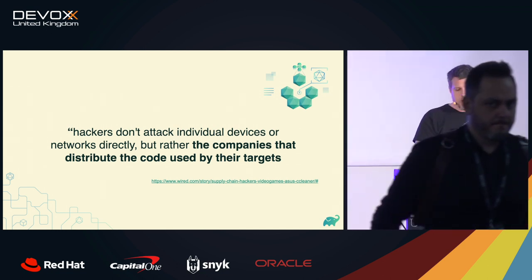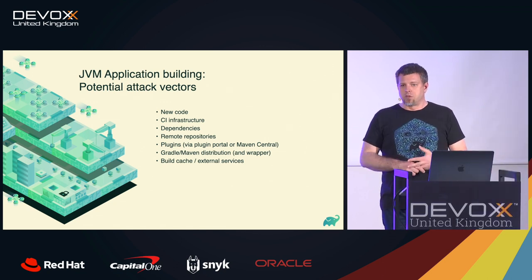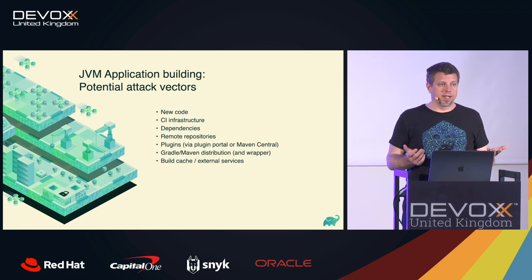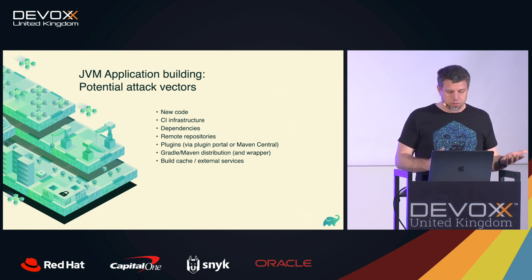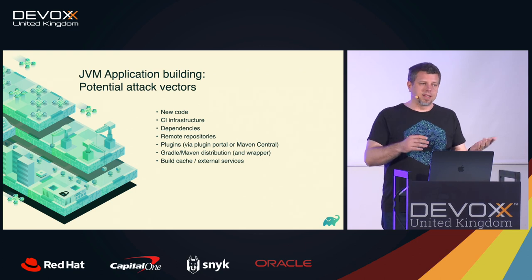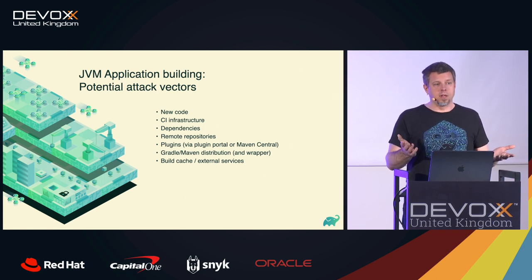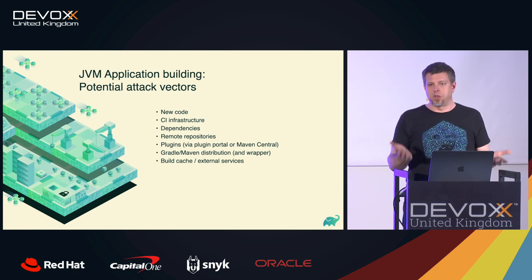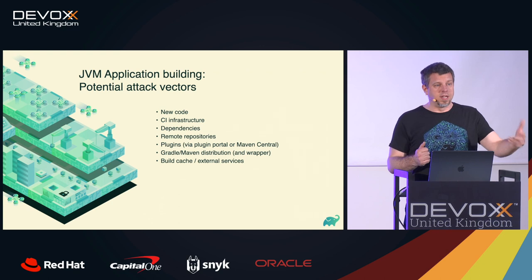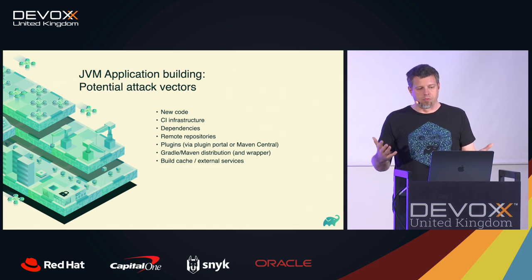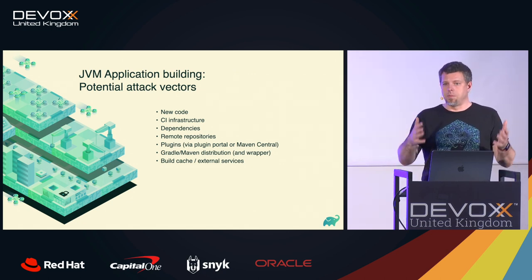Since this is a JVM conference, let's look at what this means for JVM application building and what potential attack vectors we have. Some of these apply to pretty much any project; others have a higher chance of happening in open source. But the usage of open source in the JVM world is so pervasive that some of you here are actually running slightly modified versions of open source libraries — because a pull request didn't make it in time but you needed the fix.